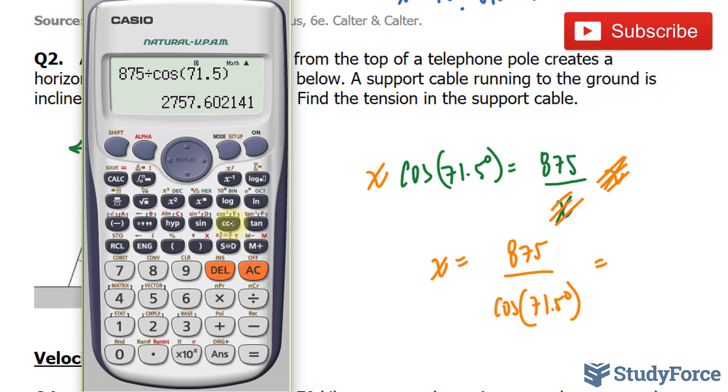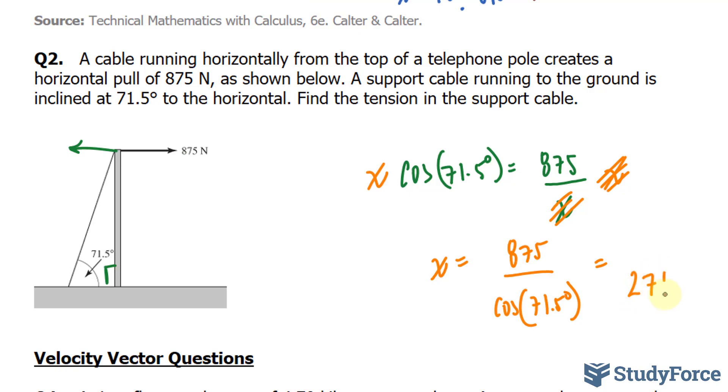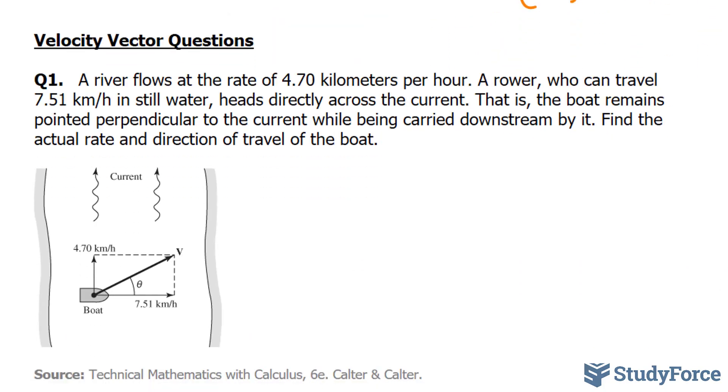875 divided by cosine of 71.5 gives us 2,757. This needs to be to three significant figures. So everything after this 5 is insignificant, but because this 7 is more than 5, this 5 becomes a 6. We have 2760 newtons. That number represents the tension in the support cable. If you would like to see the answers to the velocity questions, make sure you watch part 2 of this series.